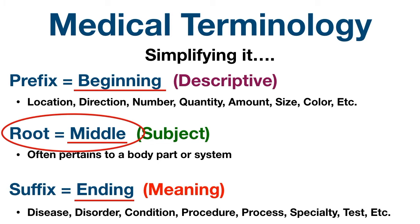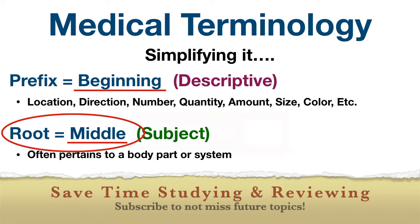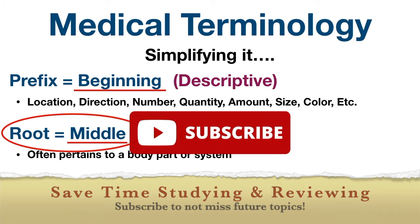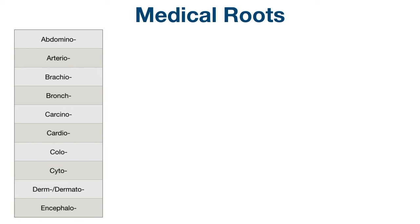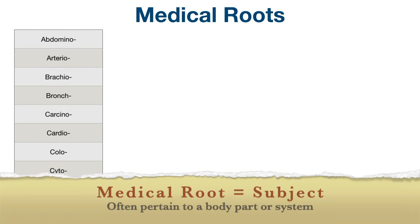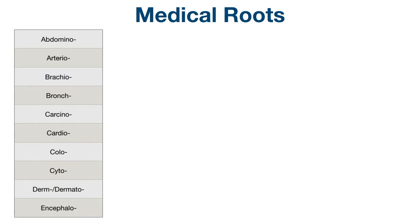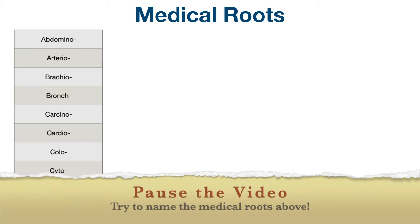We're now going to focus on common medical roots, and make sure to subscribe to not miss out on the future video about common suffixes. As mentioned before, medical roots are the subject of the word and often pertain to a body part or system. The root may form the beginning of the word if there is no prefix, or the middle of the word if there is a prefix. There may also be more than one root combined together. As we go through the medical roots, hit pause in the video and see how many you can define before looking at the answers.